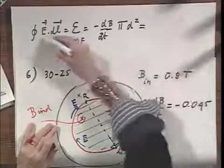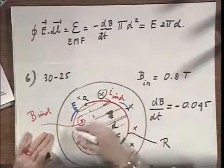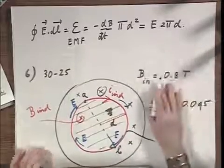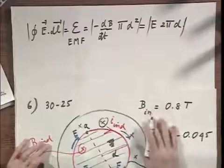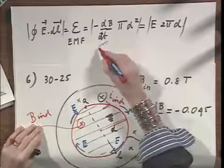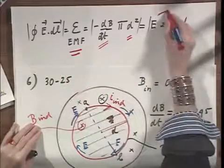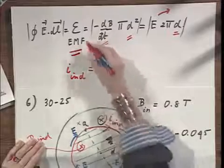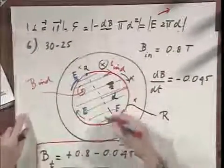That also equals E times 2πd, because when I go around, E·dl — E is the same everywhere — so you get E times 2πd. I suggest you forget about minus signs and take absolute values everywhere, because we already know the induced current direction. You know dB/dt and you know d, so you calculate the EMF, then E, and finally the induced current is EMF divided by the resistance R of the wire.